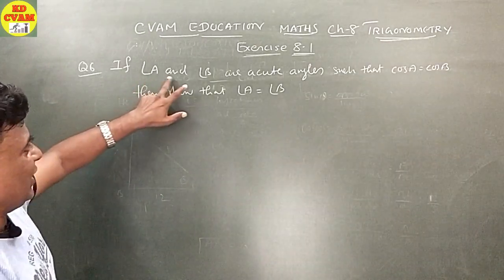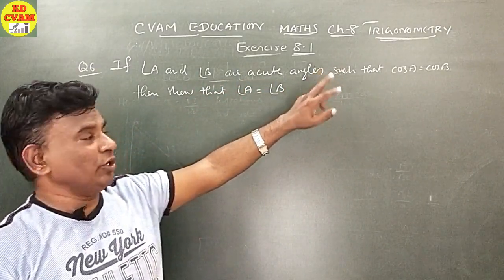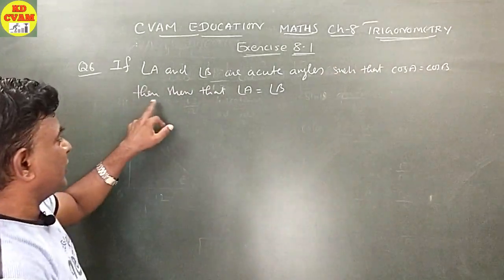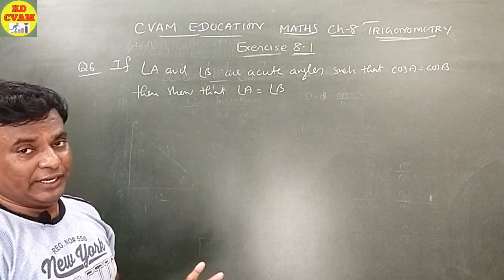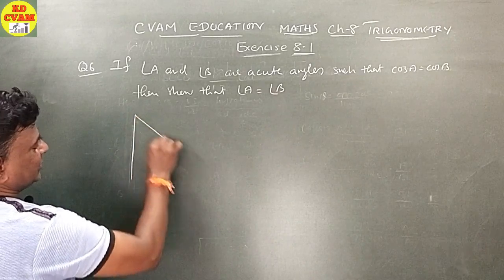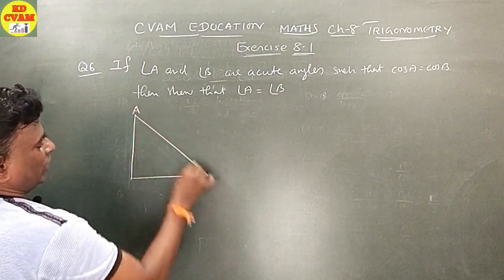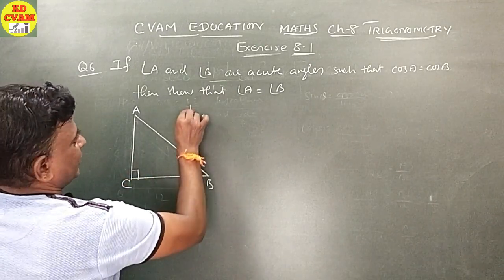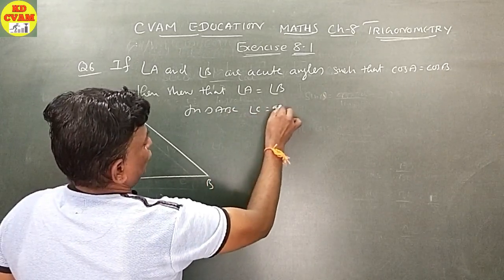Question number 6: if angle A and angle B are acute angles — that is, below 90 degrees — such that cos A equals cos B, prove that angle A equals angle B. Since A and B are acute angles, take right triangle ABC where angle C is equal to 90.